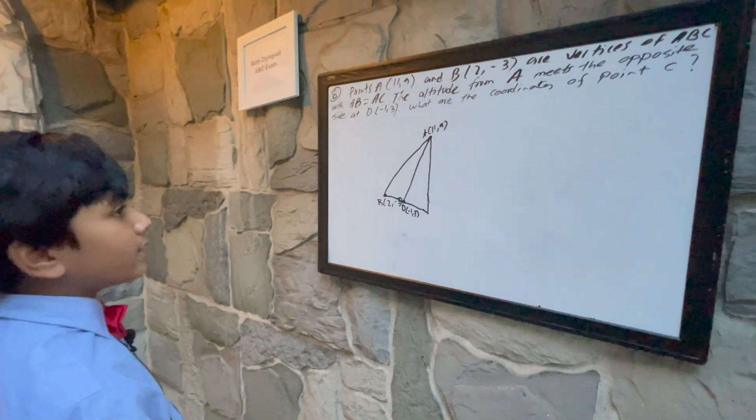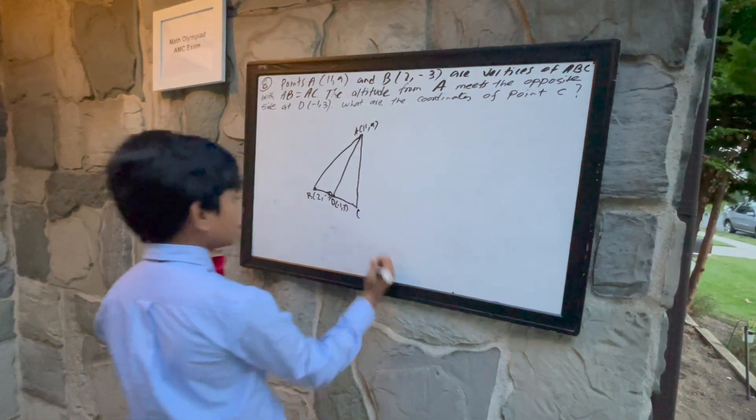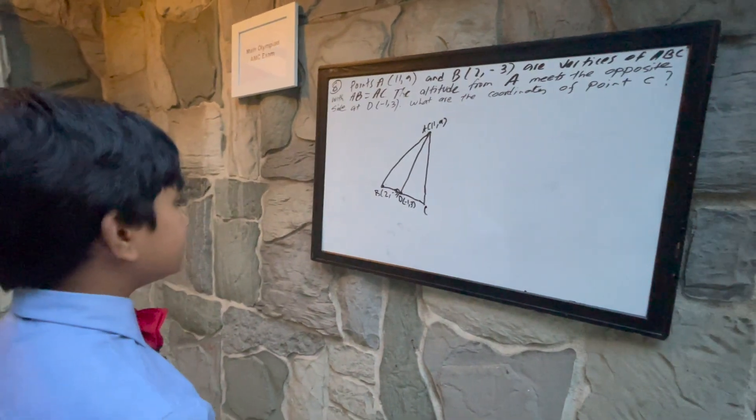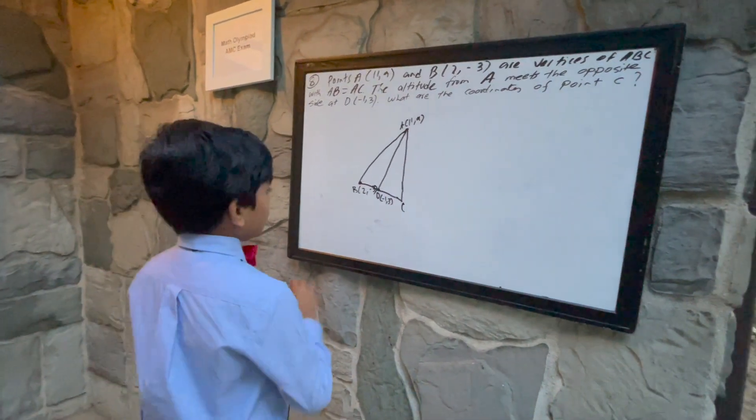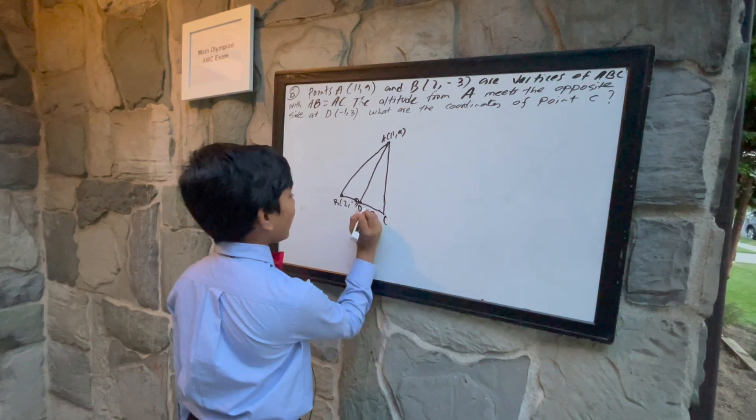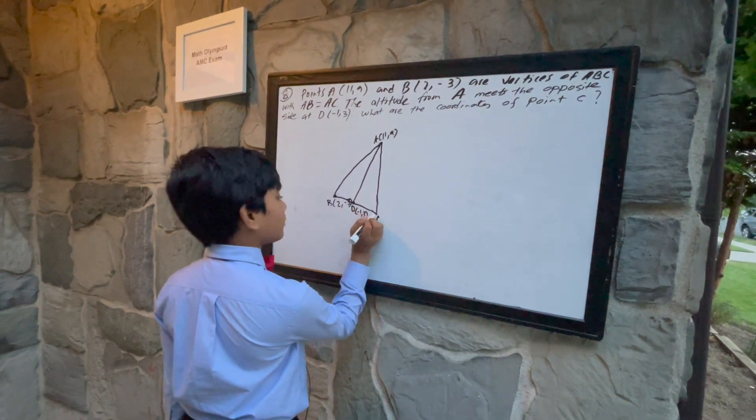What are the coordinates of point C? That means that to get from B to D, we have to do the same thing as to get from D to C.